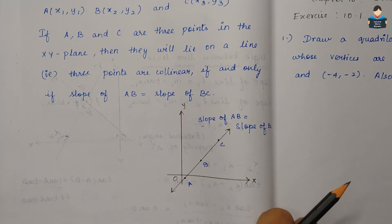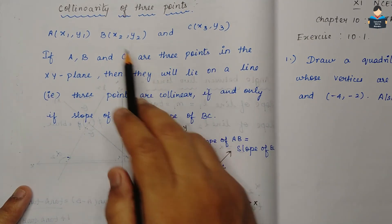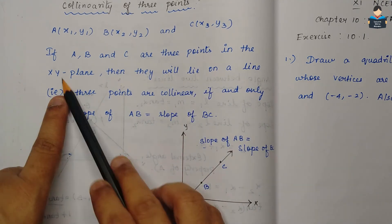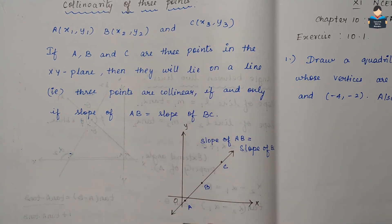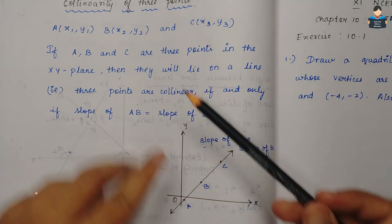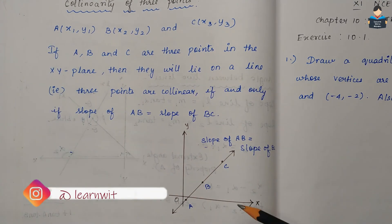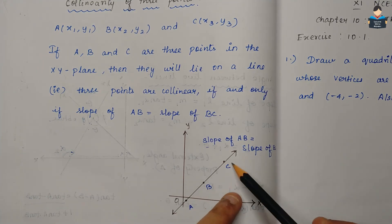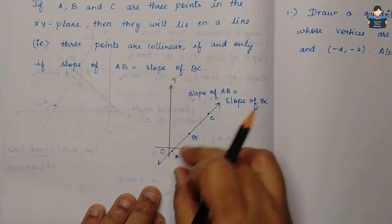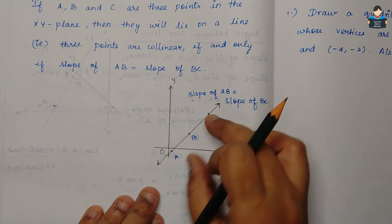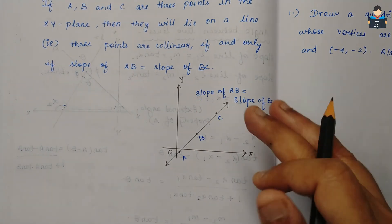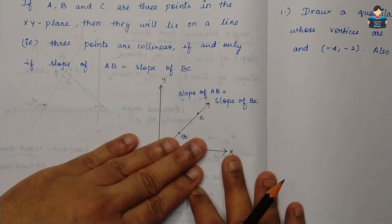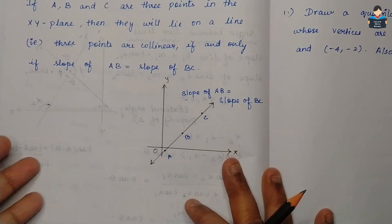Next is the collinearity of three points. If there are three points A, B, C in the XY plane, we say they are collinear if and only if the slope of AB equals the slope of BC. When those two slopes are equal, we say the three points are collinear. This completes the introduction video.